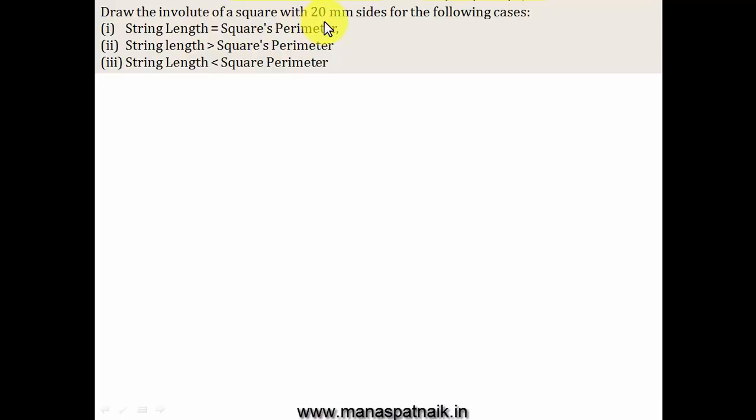Draw the involute of a square with 20mm sides for the following cases. String length equivalent to square's perimeter, greater than square perimeter, and case number three, string length less than the square perimeter. In totality, we have to deal with three different cases. For three different cases, we're going to have three different drawings of the involute. Let's start with case number one.